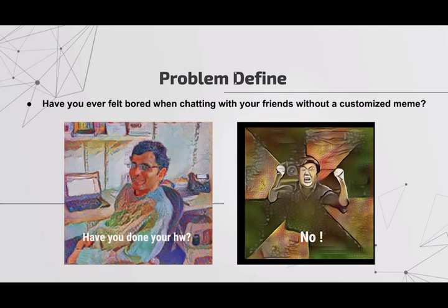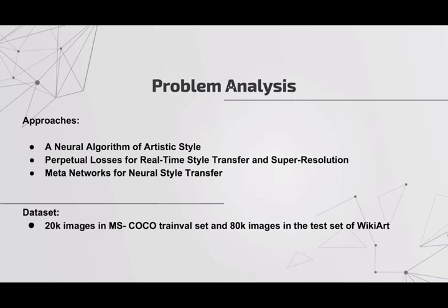Approaches we try to tackle these problems include a neural algorithm of artistic style, perceptual losses for real-time style transfer, super resolution, and meta-networks for neural style transfer. The dataset we have is 20,000 images in MS COCO training set and 80,000 images in the test set of WikiArt. The model used for visual feature extraction is VGG-19.